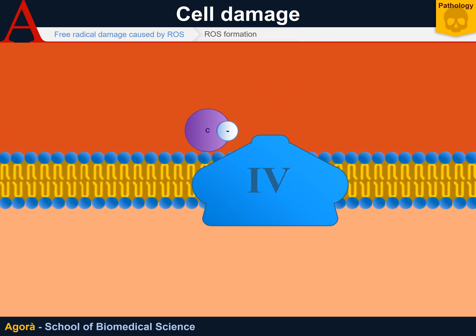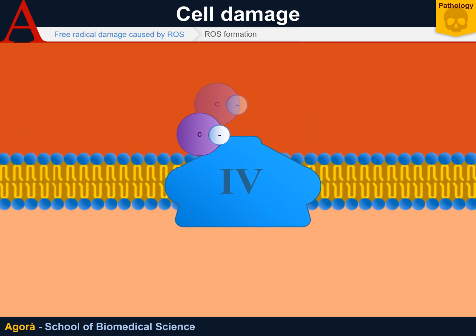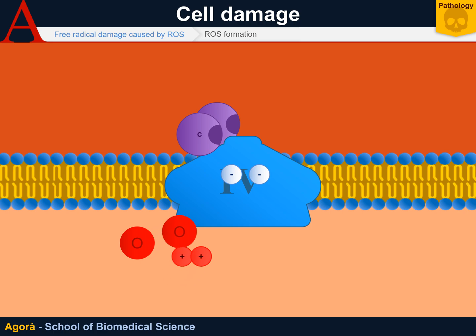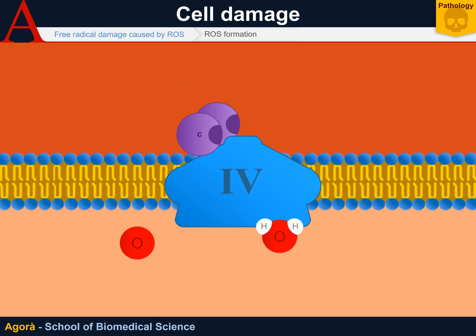Complex 4 is loaded with electrons from cytochrome C. Electrons are then passed on to an atom of oxygen, thus creating a molecule of water and pumping out two protons thanks to the energy released by this phenomenon. This is Complex 4 in brief.